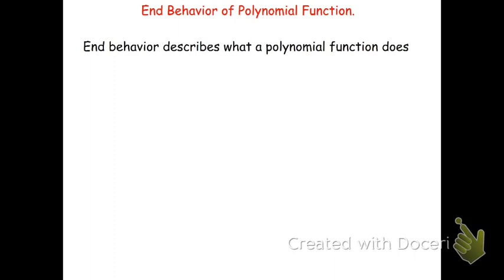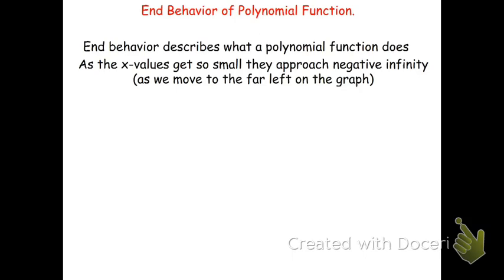The end behavior of a polynomial basically describes what happens as we move to the extreme sides of the graph. Typically, we look at what happens as the x values get so small they approach negative infinity — that means as we move to the extreme left-hand side of the graph. This can be written as: as x approaches negative infinity, we want to know where does f go.